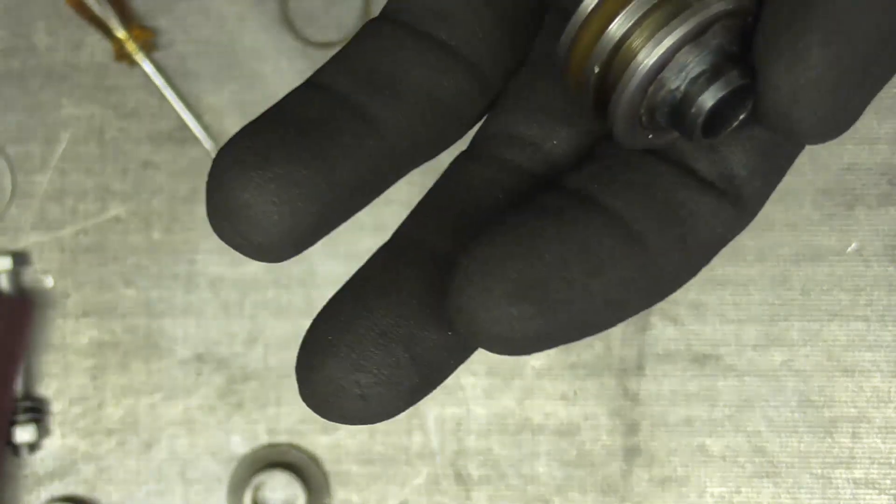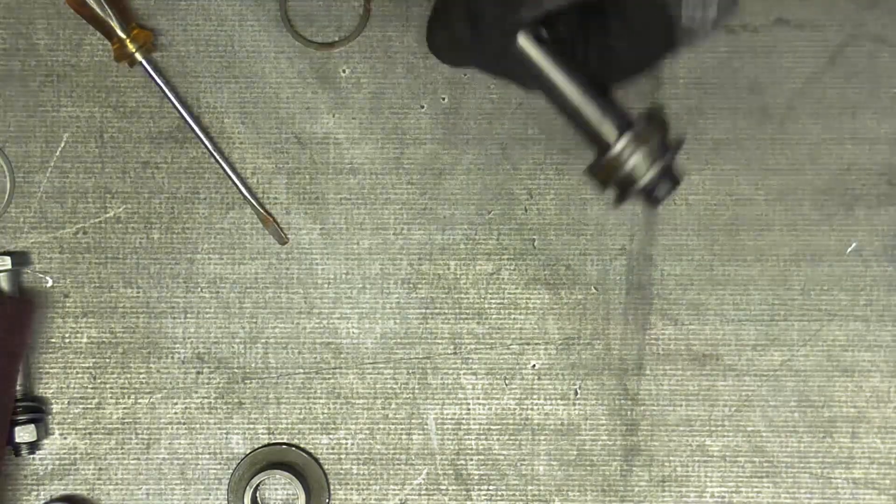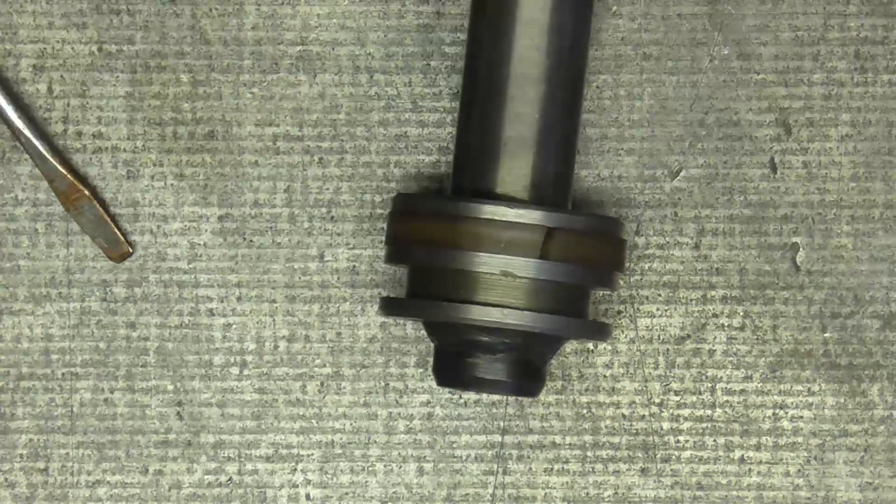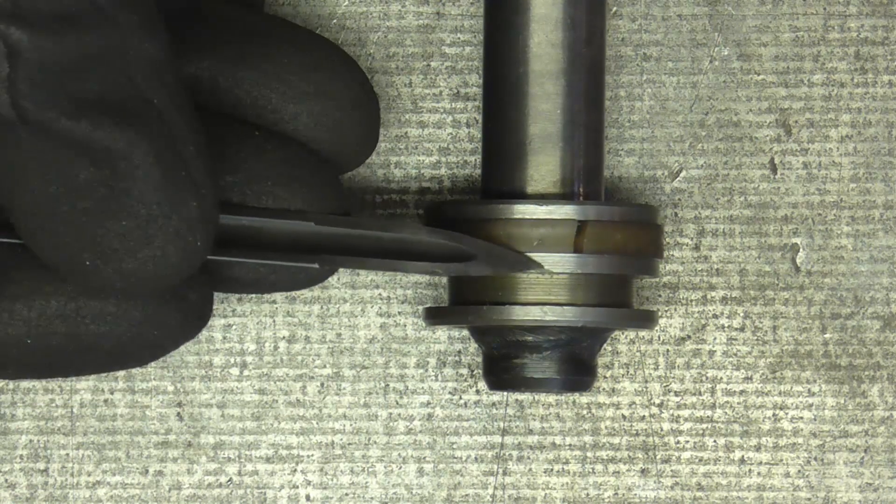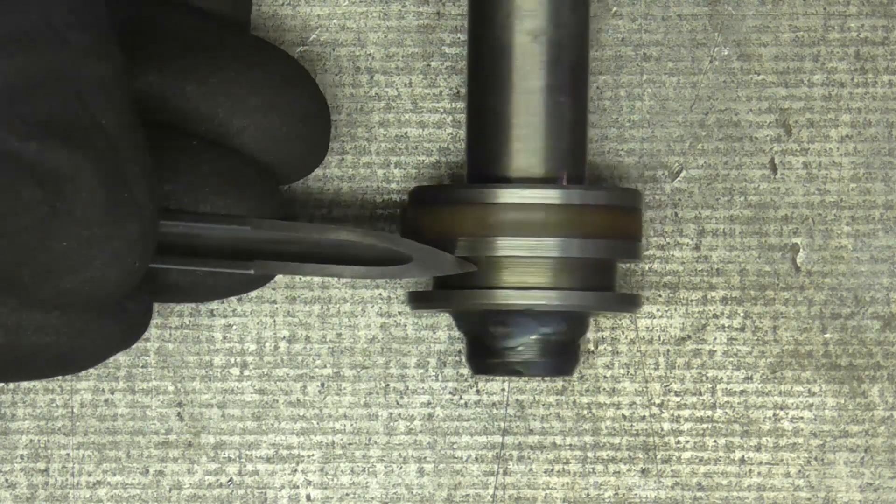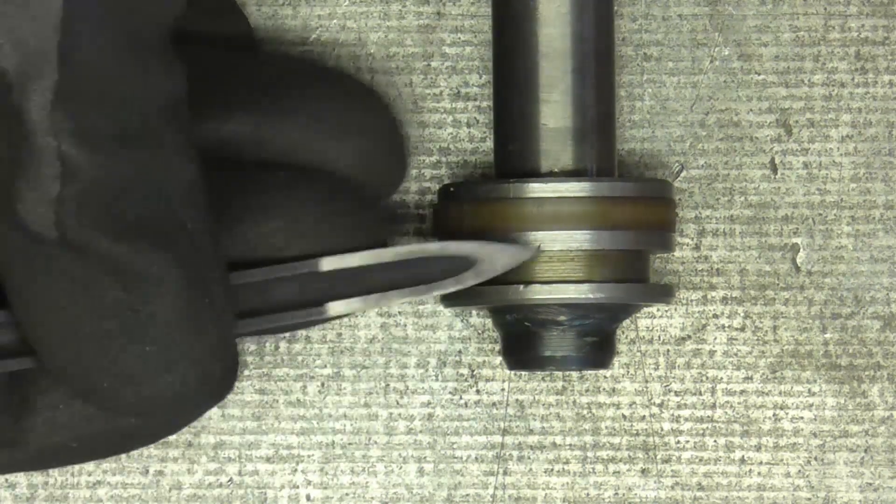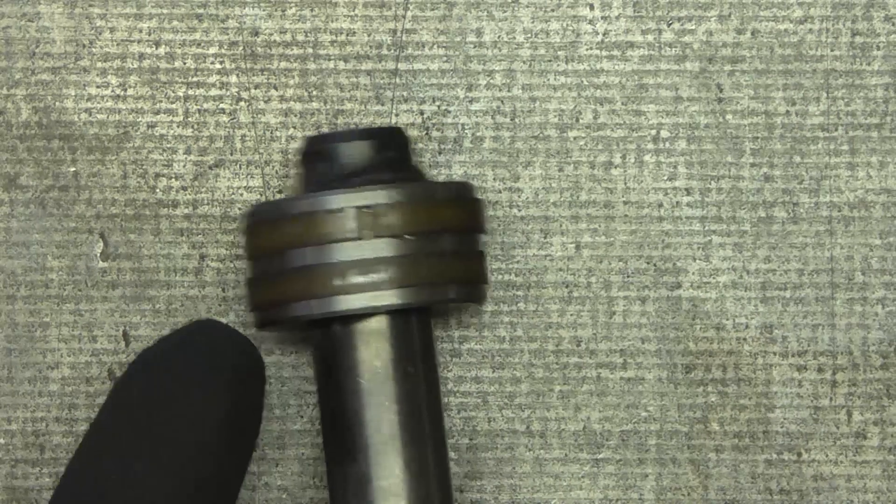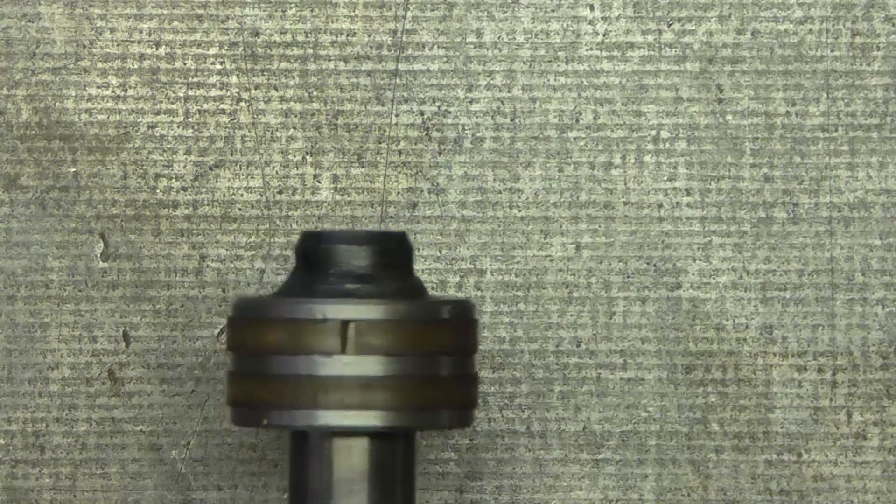Now this second groove is proving to be much more of a challenge. Let's see if I can get this to... Just in here there's actually a dent and that's trapping the ring at that point, so I need to probably get a file in there and clean that burr out. And that's the top ring all running free with spring in it.